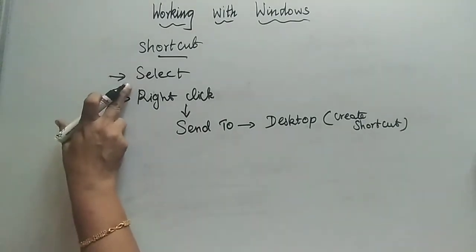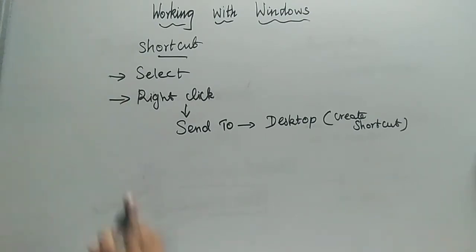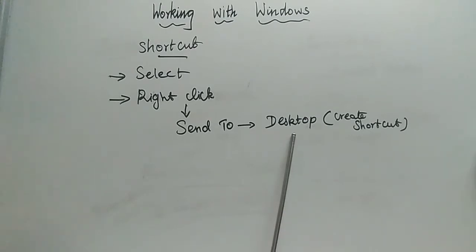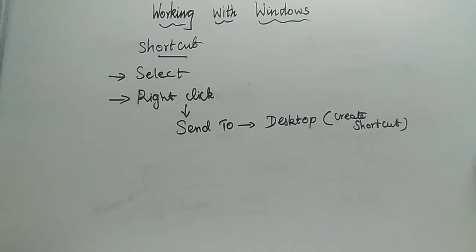After selecting the file or folder and right-clicking, the pop-up menu appears. Select Send To, then in the sub-menu select Desktop and inside the bracket you will see 'Create Shortcut.' After selecting this, a shortcut will be created on the desktop for you. This is the simple procedure to follow while creating a shortcut on the desktop.